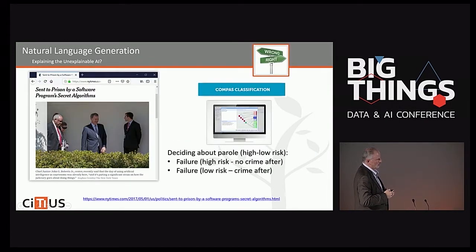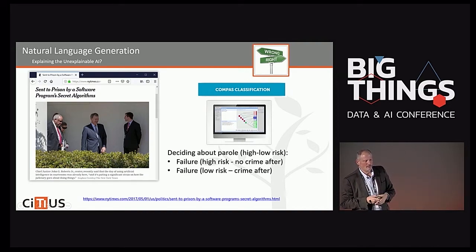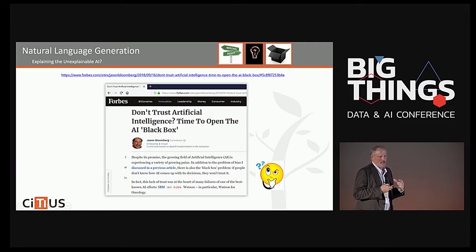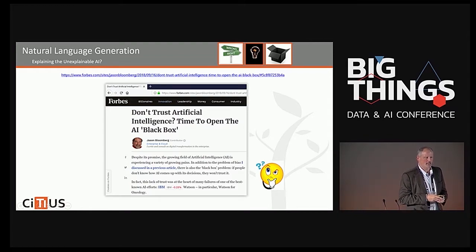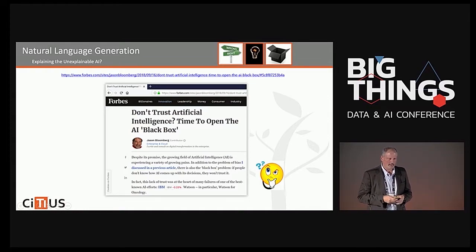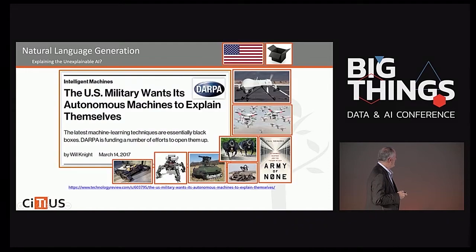So, how to explain AI? We have graphical representations and natural language, among other options. The underlying idea in explainable AI is trying to open the black box — typically algorithms, particularly neural networks — in order to show what we have inside.